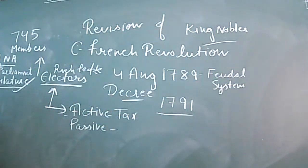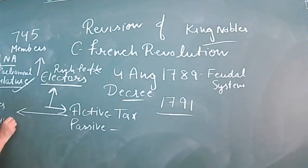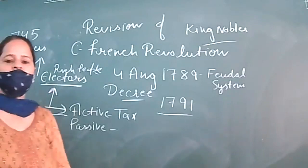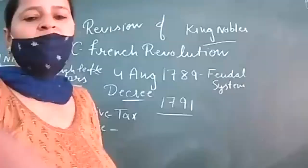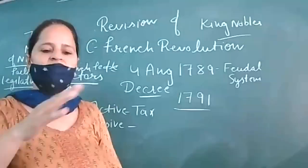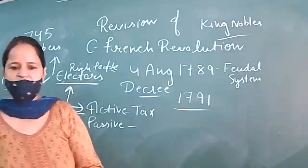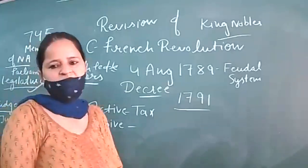Active citizens can vote for judges. This means the country implemented Montesquieu's system — powers were separated into legislature, executive, and judiciary. But there were still problems with the constitution.